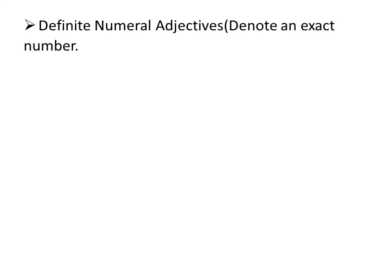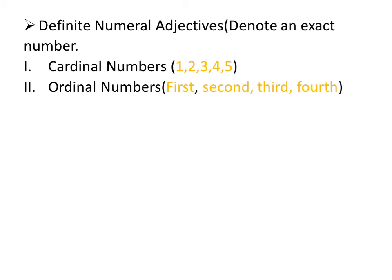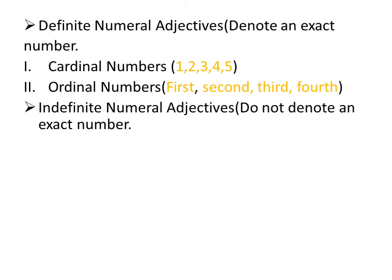Adjectives of number can be definite numeral adjectives or ordinal numeral adjectives. Definite numeral adjectives denote an exact number — cardinal numbers like 1, 2, 3, 4, 5, 6, 7 and ordinal numbers like first, second, third, fourth, fifth. Indefinite numeral adjectives do not denote an exact number — examples are many, some, few, any, certain.